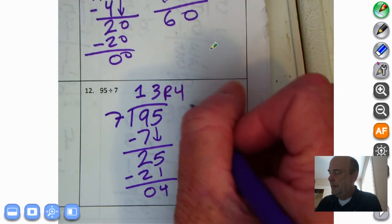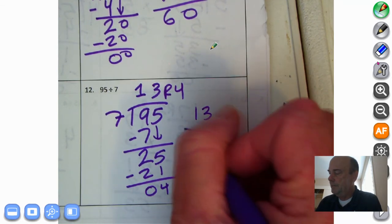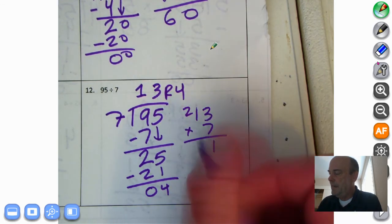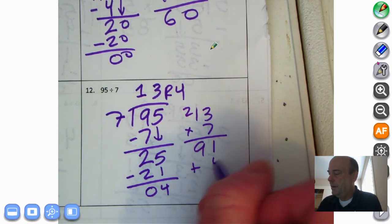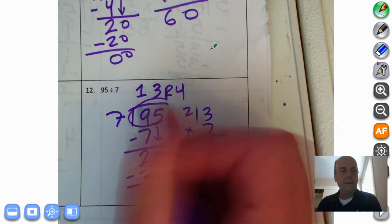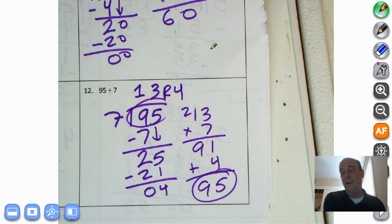Let's go ahead and do the math. 13 times 7. 3 times 7 is 21. 1 times 7, 8, 9, 91 plus 4. 1 plus 4 is 5. And we're at 95. So there was a remainder of 4.